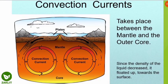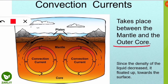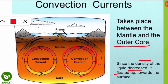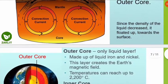This diagram shows the convection current that takes place between the mantle and the outer core region. As you can see, the current moves from the mantle toward the outer core because of heat transfer. Since the density of the heated liquid decreases, it floats up toward the surface. In the surface layer, less dense liquids are found, while closer to the core, the liquid has higher density.